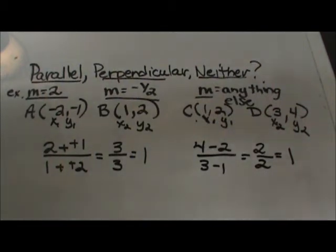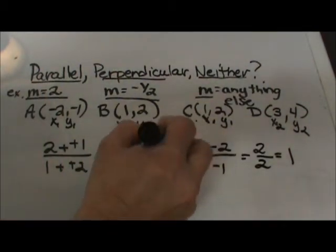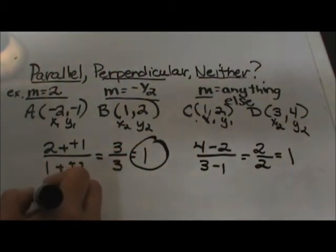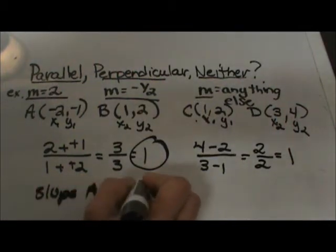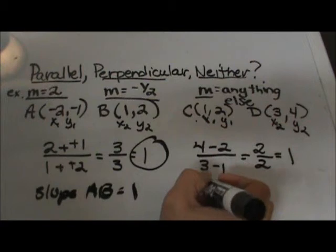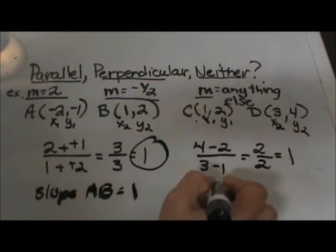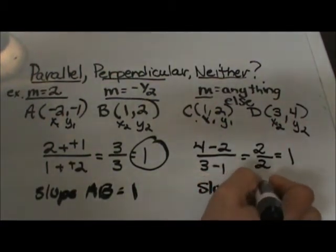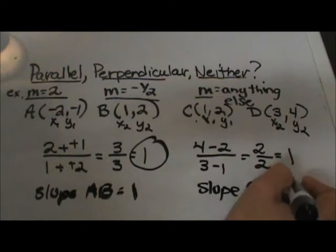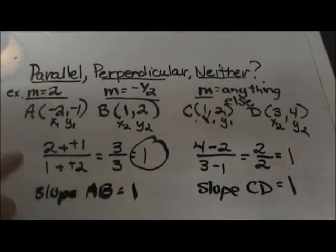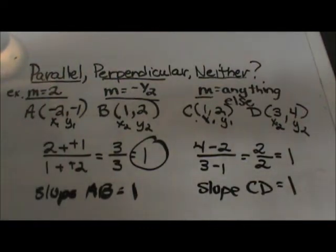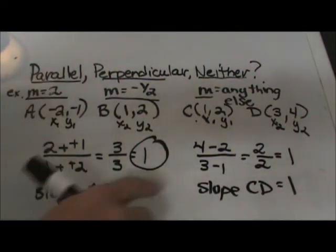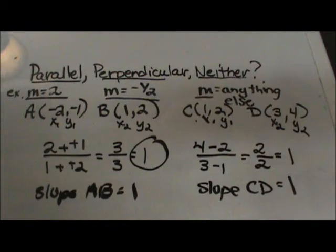So now let's compare the slopes of our lines. The slope of AB is equal to positive 1. The slope of CD is also positive 1. So they have the same slope, so they are parallel. Since they have the same slope, we can say that the two lines are parallel.